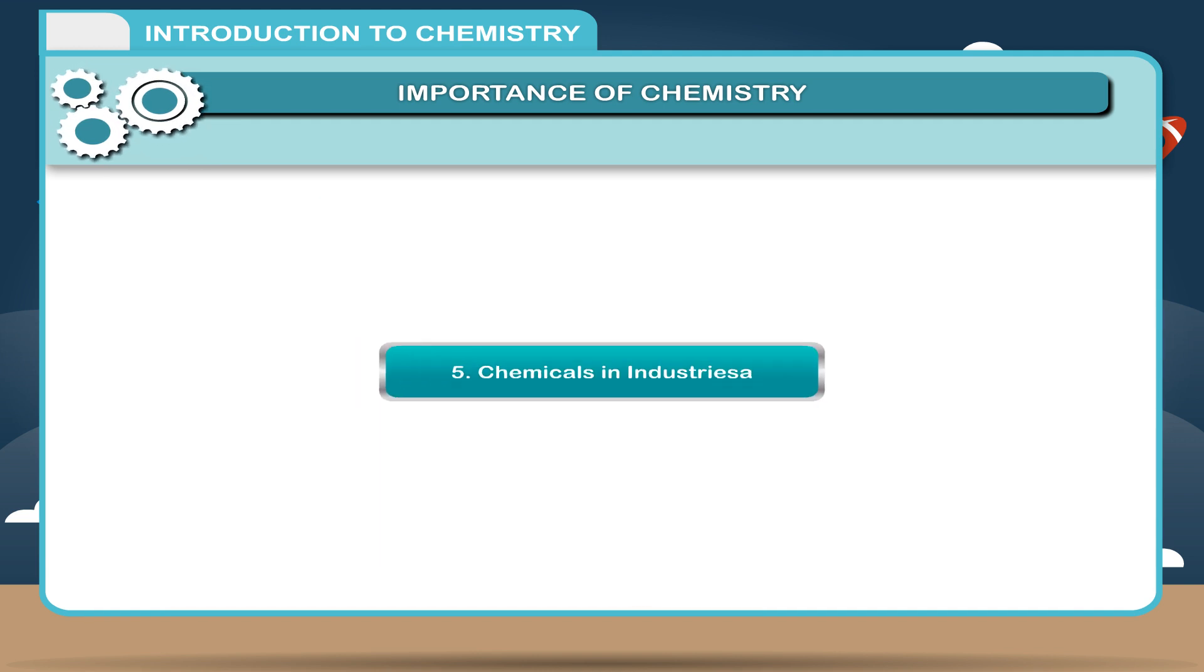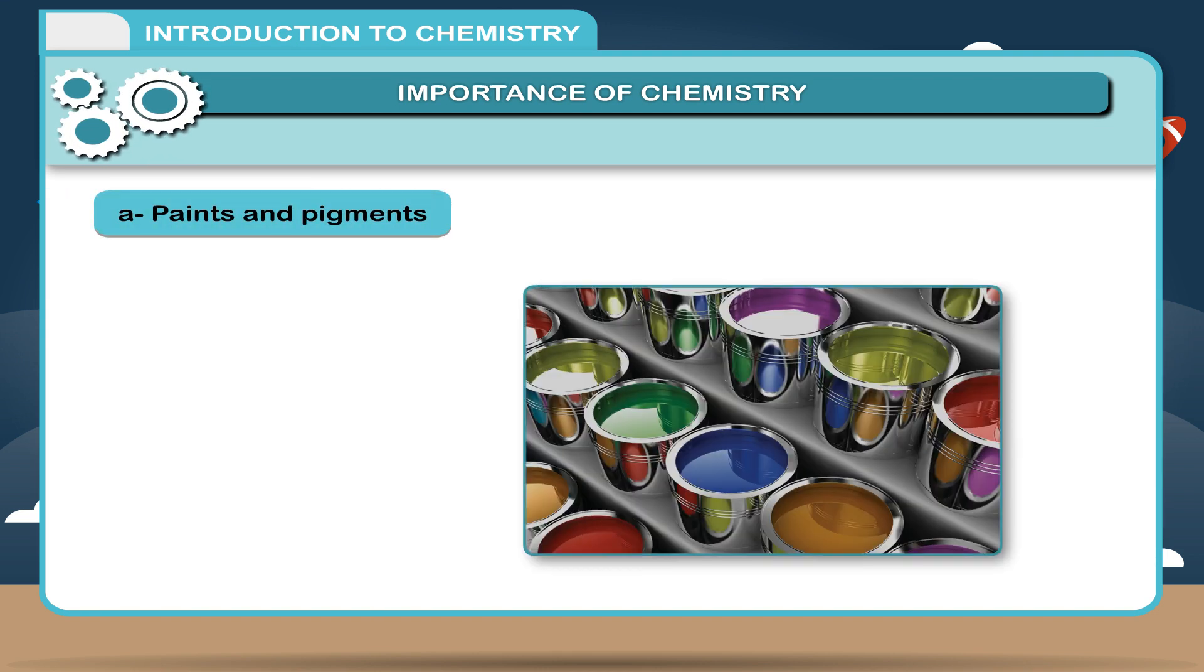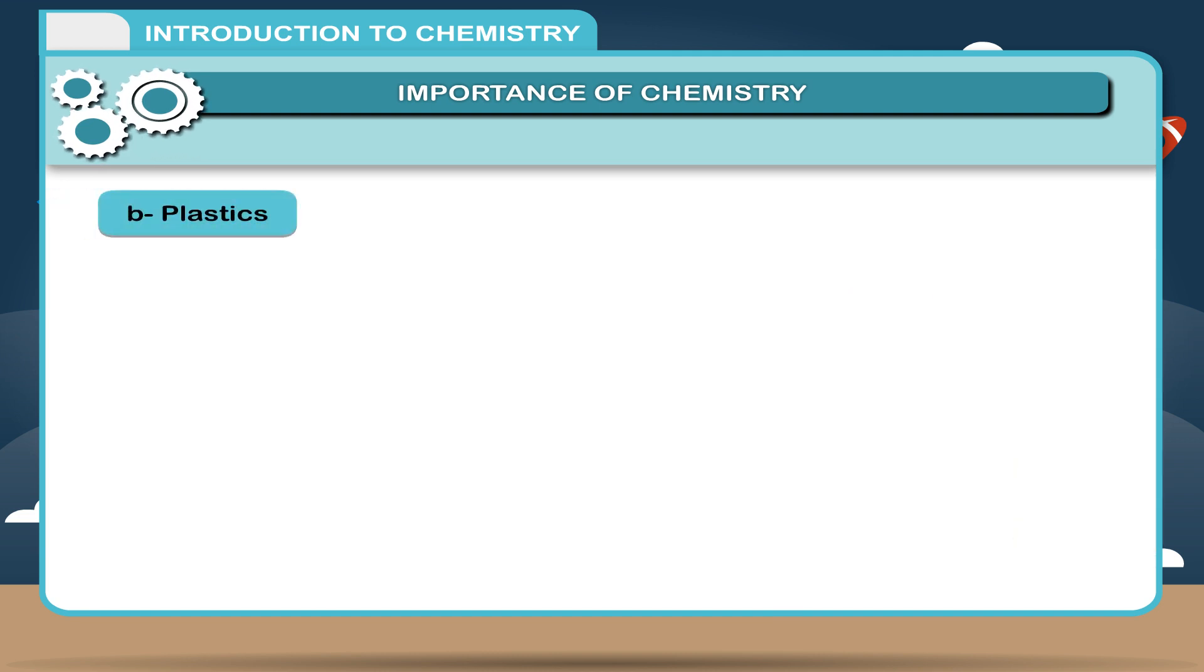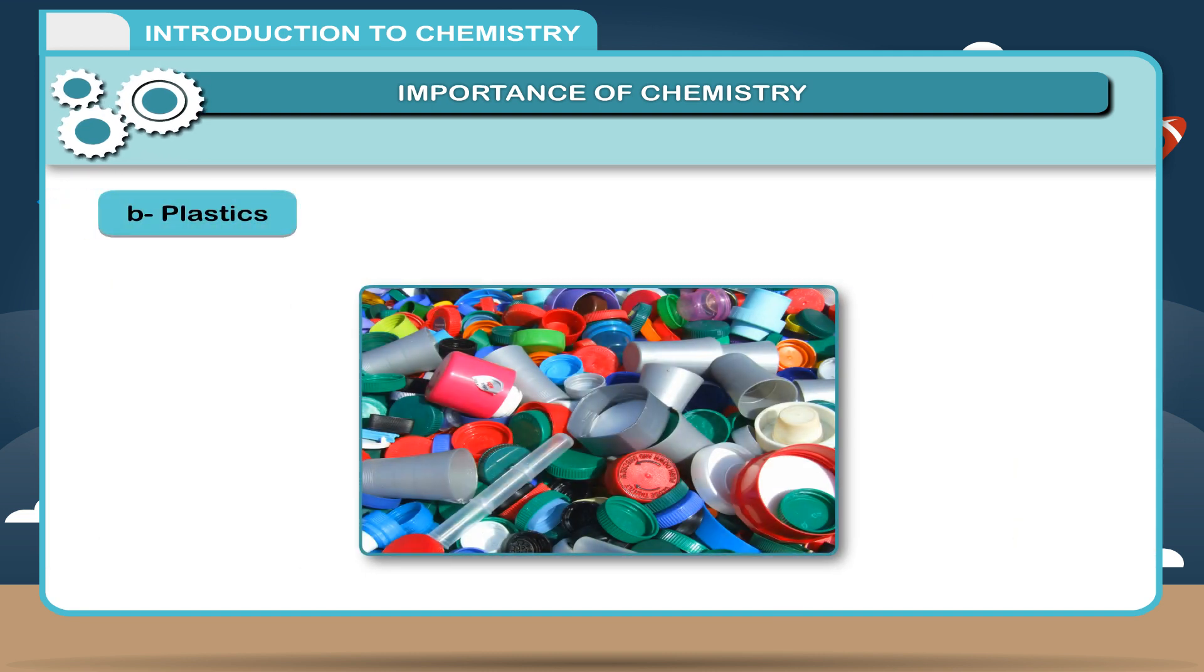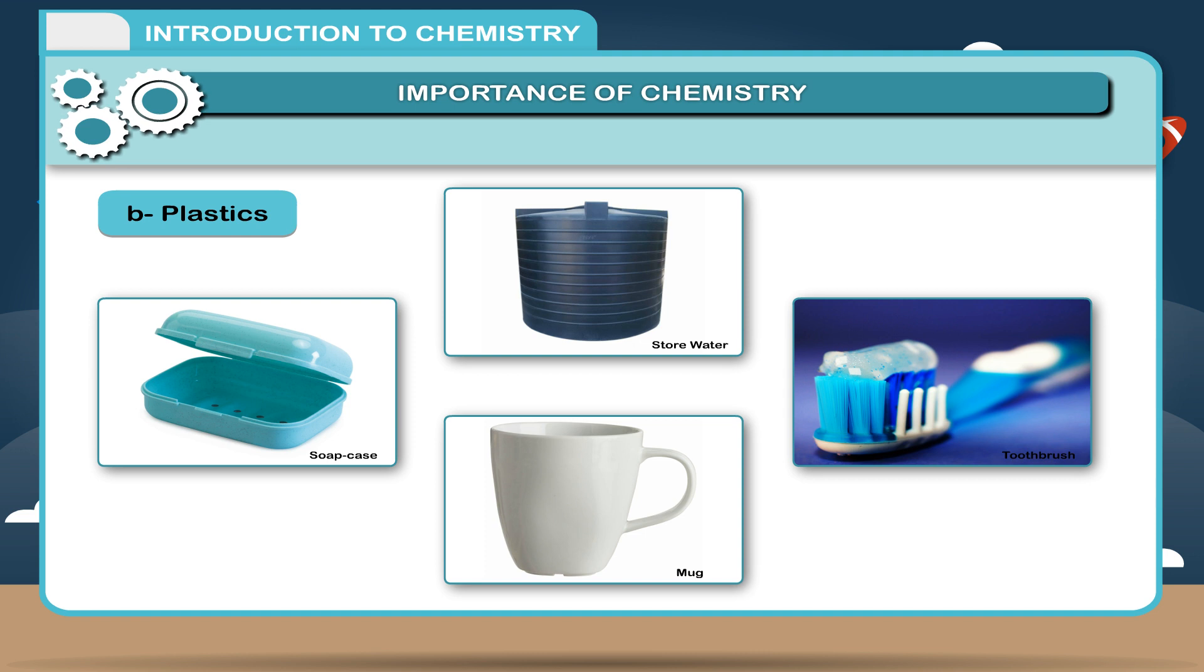5. Chemicals in Industries. A. Paints and Pigments - paintbrush and similar items are all different kinds of plastics, which are a product of chemical research.